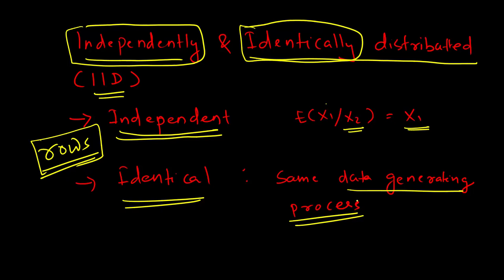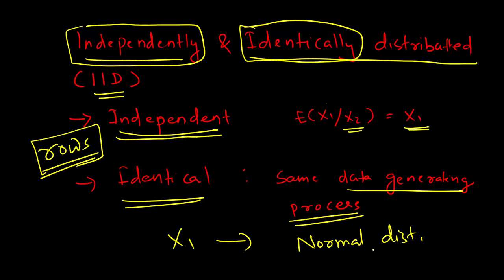If data point x1 is generated from a normal distribution, then all other data points in that particular dataset will also have to be generated from the same type of distribution. Whether this is true in a practical scenario is something that is questionable, but that is what the assumption is.